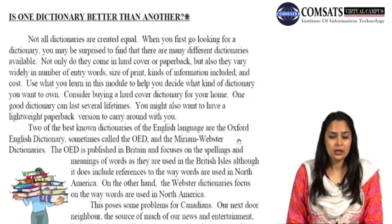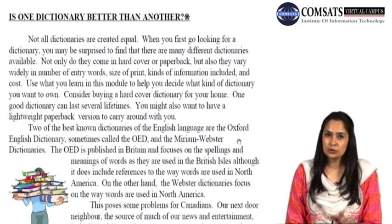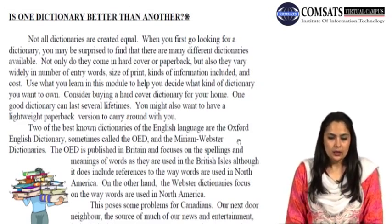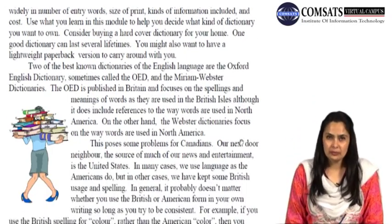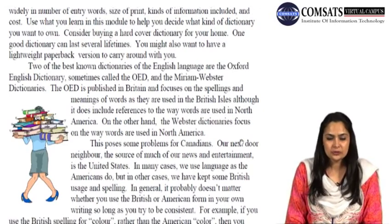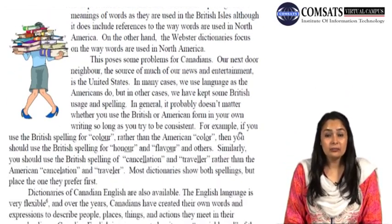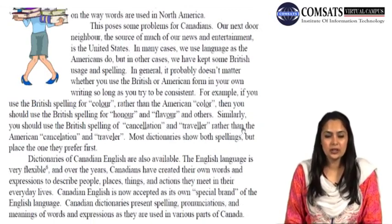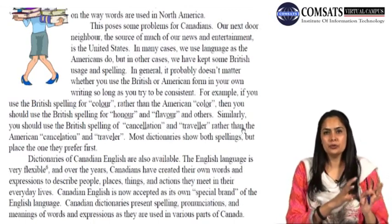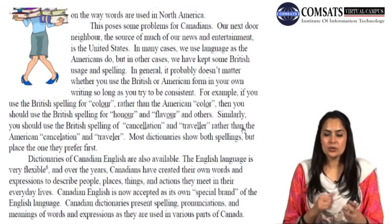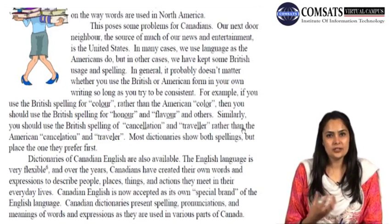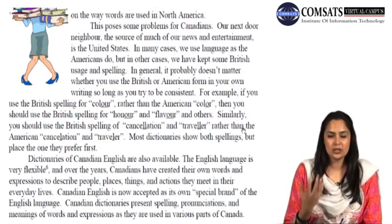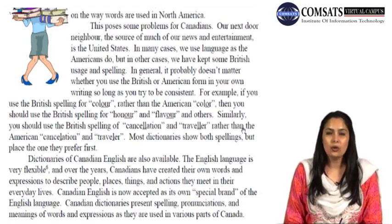Two of the best-known dictionaries of the English language are the Oxford English Dictionary — sometimes called the OED — and the Merriam-Webster dictionaries. Oxford English Dictionary has its advanced version called Oxford Advanced Learner's Dictionary, and Merriam-Webster basically started off as an American English dictionary. The OED is published in Britain and focuses on spellings and meanings of words as used in British English, although it does include references to the way words are used in North America. Dictionaries are always very helpful resources because they identify differences between varieties of English and help students use them consistently.